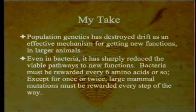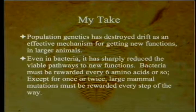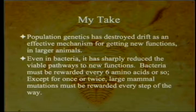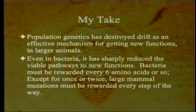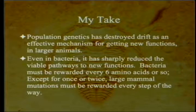My own take: population genetics has destroyed drift as an effective mechanism for getting new functions in larger animals — not in theory, but in practice. Even in bacteria, it has sharply reduced viable pathways to new functions. Bacteria must be rewarded every six amino acids or so; if not rewarded that fast, it takes too long to evolve a new gene. For large mammals, mutations must be rewarded every single step of the way, and we haven't found pathways like that when we've looked.